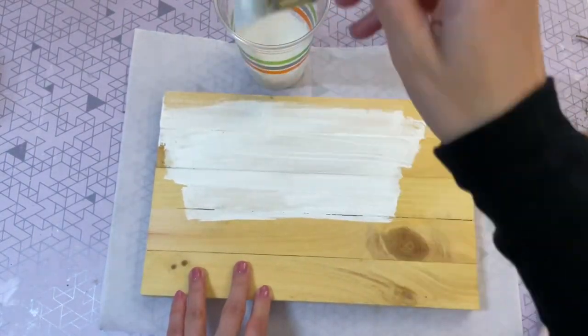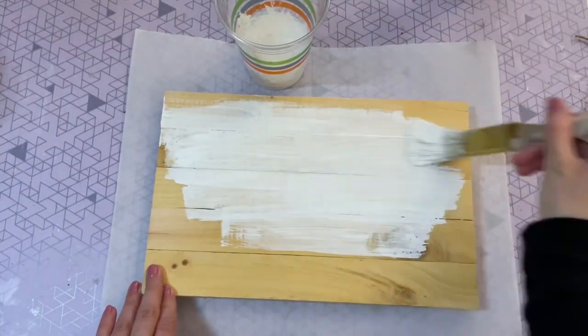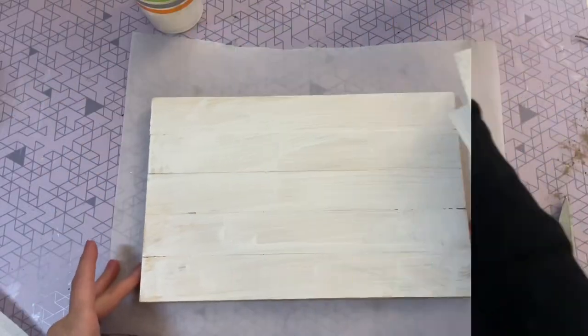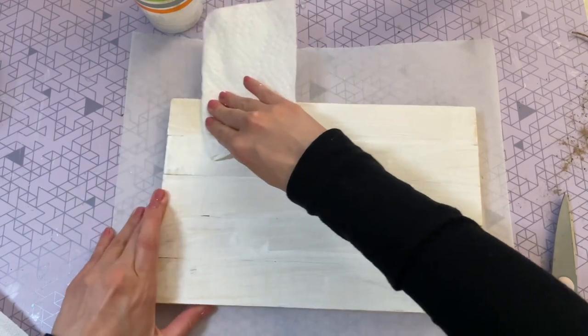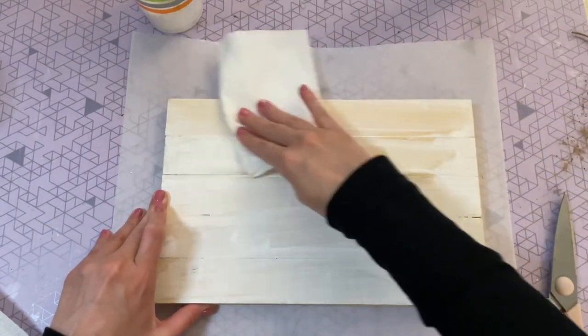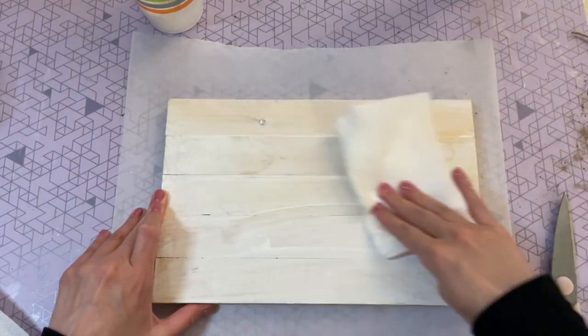So to get that look, I just added a little bit of acrylic paint to my cup here and then I watered it down. And now I'm just taking a brush and brushing it over the surface. And then before it dries, I'm taking a clean, dry paper towel and just carefully rubbing off some of that excess paint.